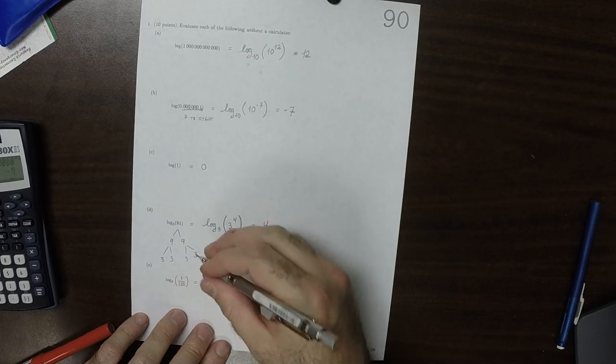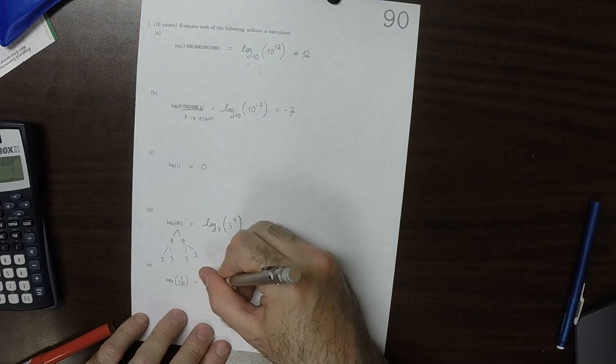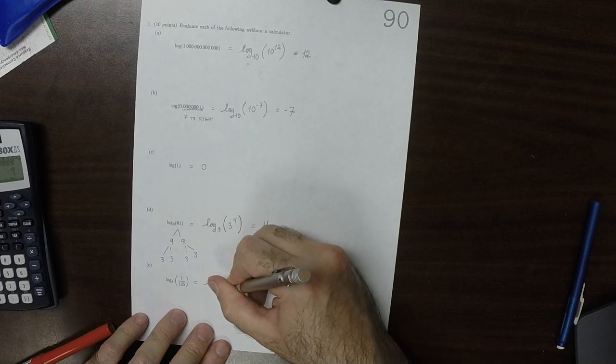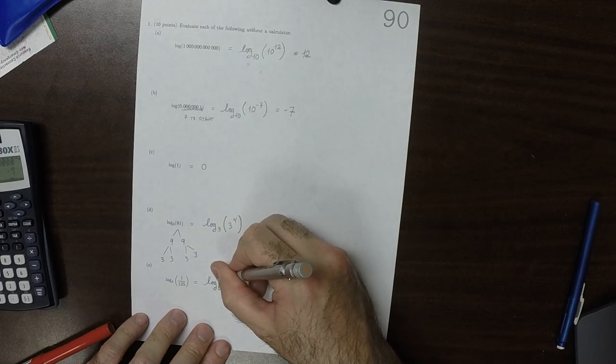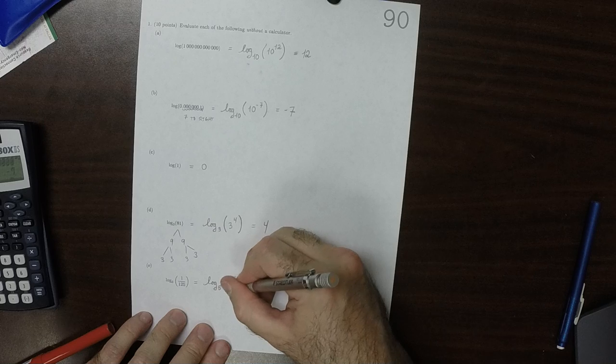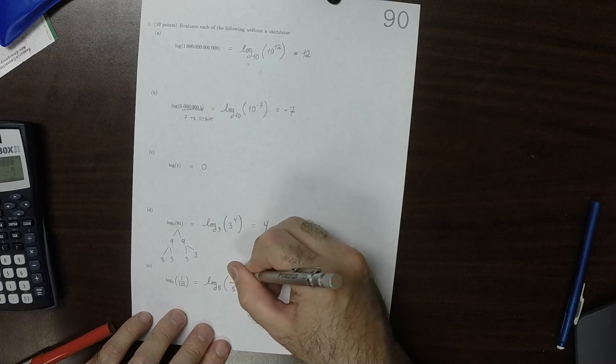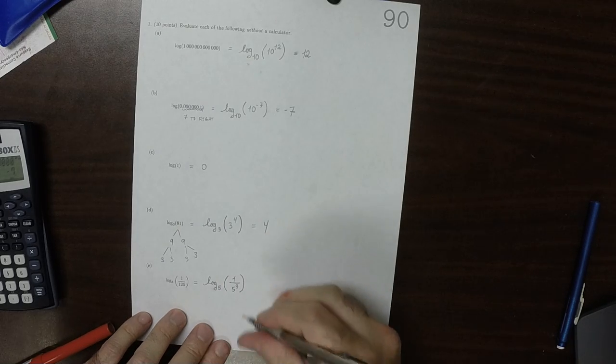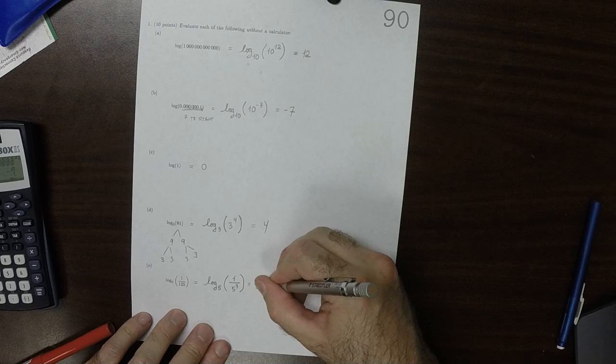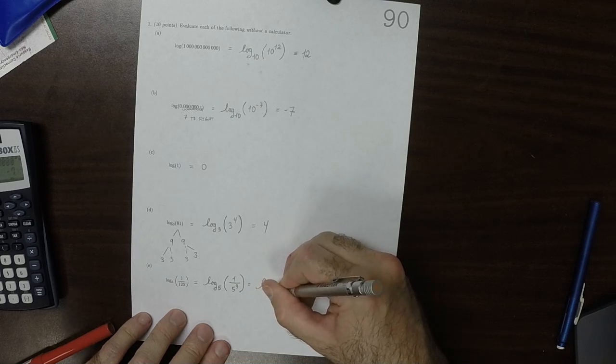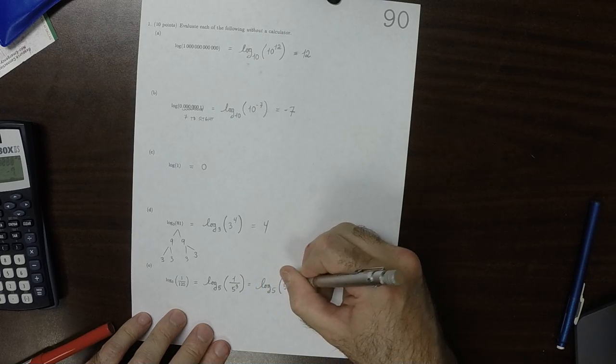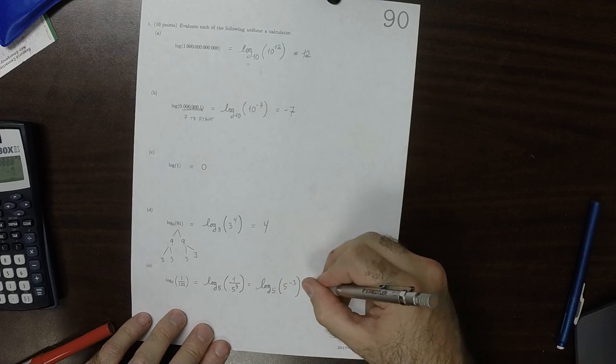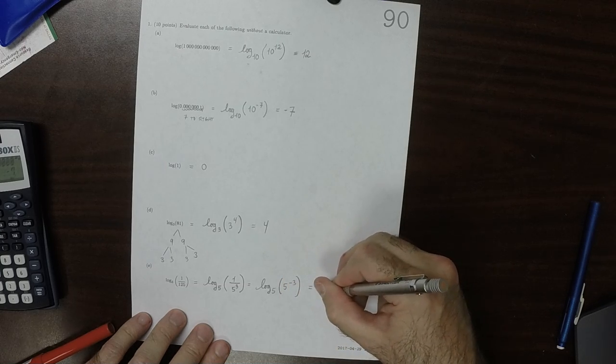And then this log base 5 of, well, that's 1 over 5 to the 3, because 5 to the 3 is 125, so that's log base 5 of 5 to negative 3, so that's negative 3.